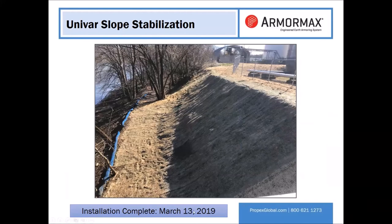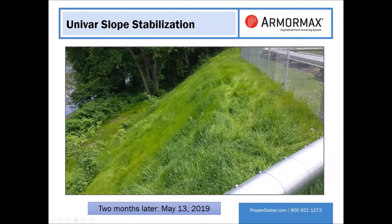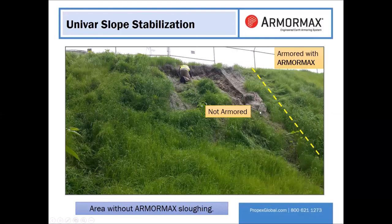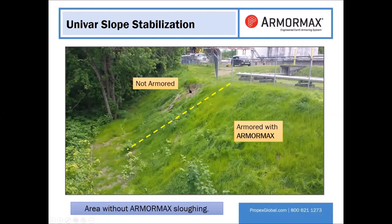Here's a shot on March 13th of last year and then exactly two months later on May 13th — you can see an excellent stand of vegetation and the slope is very stable. But walking out on the dock and looking over, we can see an area where the contractor did not armor. You can see the straw blanket on top but there's no green ArmorMax below it. It's unfortunate they didn't carry the ArmorMax further, but it does give a good side-by-side comparison of what it looks like armored versus non-armored.